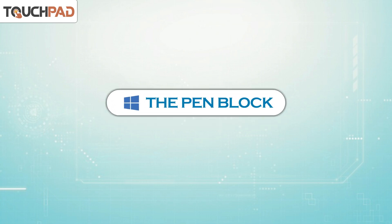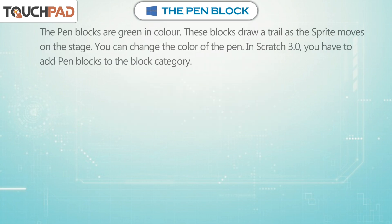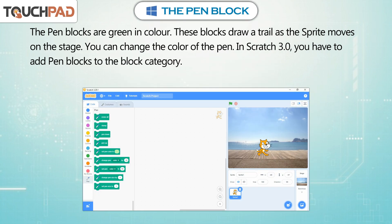The pen blocks are green in color. These blocks draw a trail as the sprite moves on the stage. You can change the color of the pen.